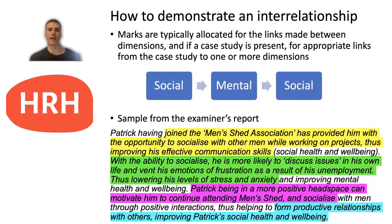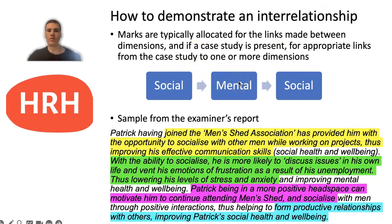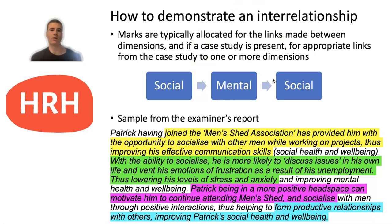The question asked students, for four marks, to describe the interrelationships between two dimensions of Patrick's health and well-being. Marks are typically allocated for the links made between dimensions. For example, if you link the social dimension to the mental dimension and back to social again, you've focused on two dimensions. Marks are allocated where the arrows are — at the links between dimensions. With four marks, two marks go to those links, and a maximum of two more marks can be gained by linking aspects of the case study to examples of the dimensions.